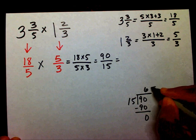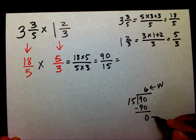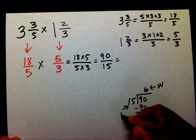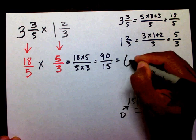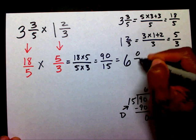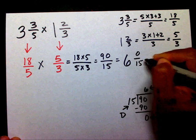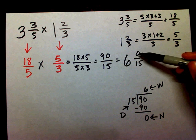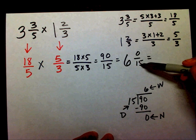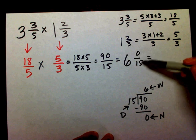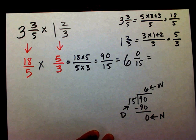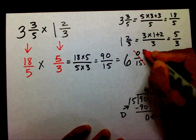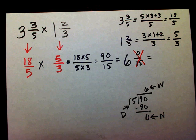This is my whole number, this is my numerator, and this is my denominator. So I have six and zero-fifteenths. If I have nothing out of fifteen, I basically have nothing. So we can just cross that out and the answer is going to be six.